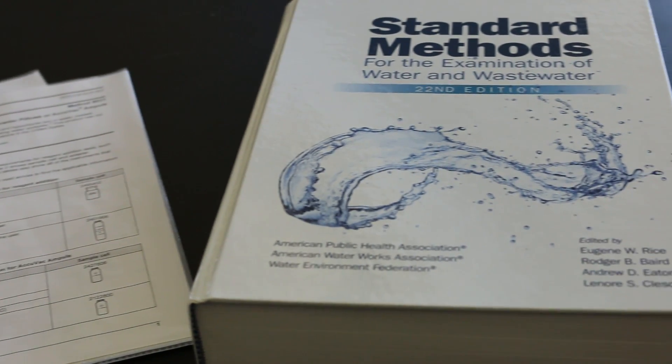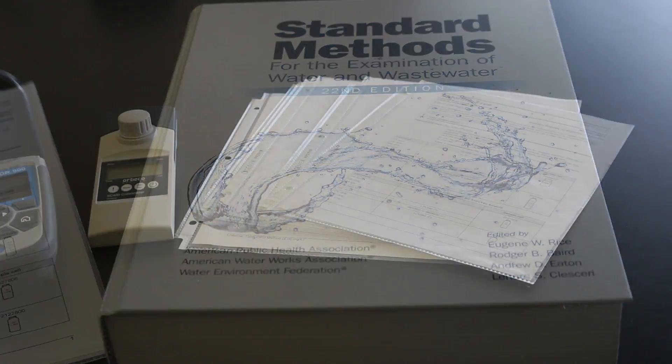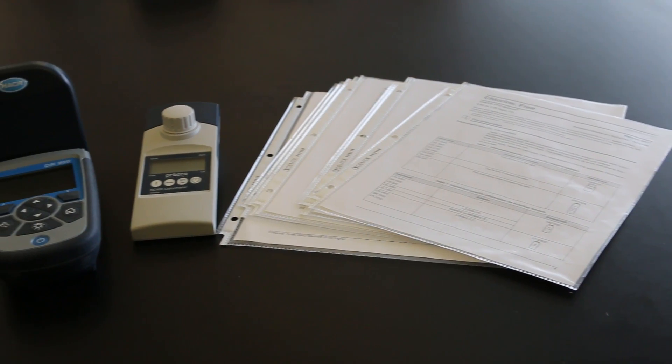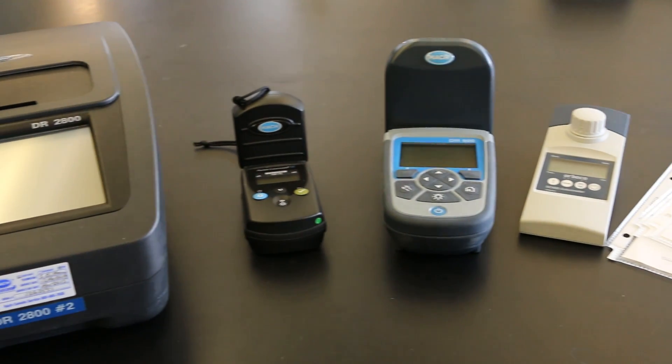The method we are following is adapted from standard methods for the examination of water and wastewater. It is used for testing free chlorine, which is the amount of hypochlorous acid and hypochlorite ion found in a drinking water sample.